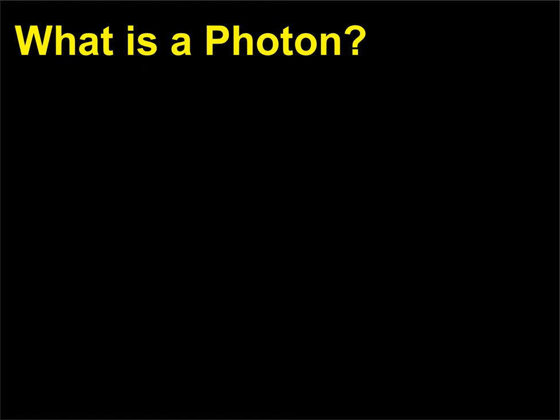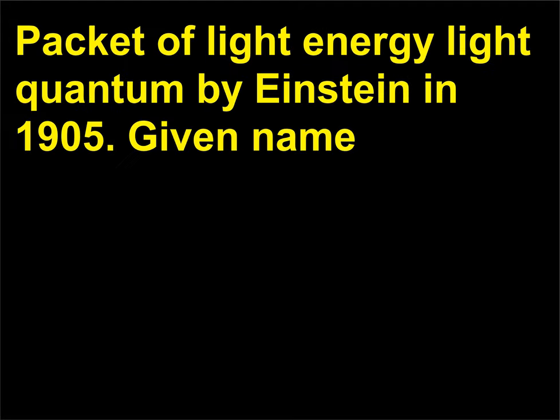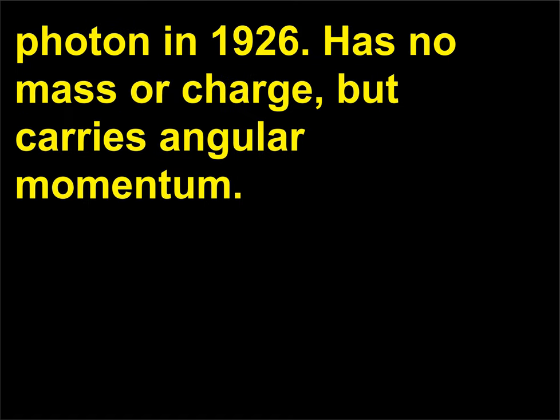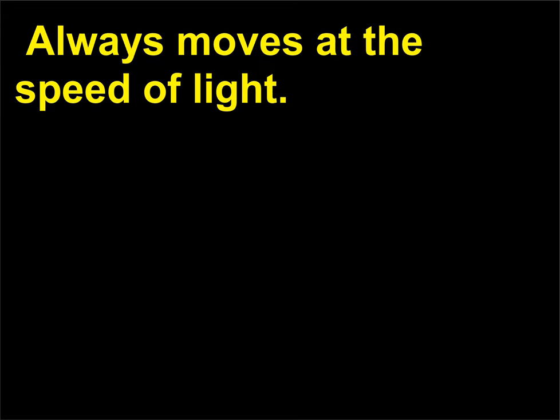What is a photon? A photon is a packet of light energy, or light quantum, named by Einstein in 1905 and given the name photon in 1926. A photon has no mass or charge, but carries angular momentum, and always moves at the speed of light.